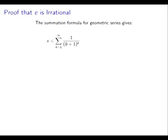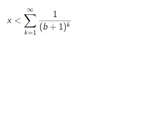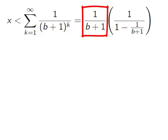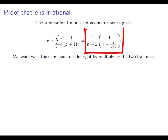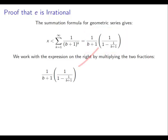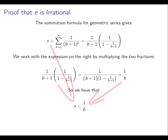This gives us that x is less than that sum, which equals 1 over (b plus 1) times 1 over (1 minus 1 over (b plus 1)). Now we fiddle with the expression on the right by multiplying the two fractions. Multiplying the numerators gives 1, and multiplying the denominators — (b plus 1) times (1 minus 1 over (b plus 1)) — it turns out we simply get b. So we just have that x is less than 1 over b. But b is a positive integer, so 1 over b is always going to be less than or equal to 1. Therefore x is less than 1 over b, and 1 over b can at most be 1, so x is less than 1.